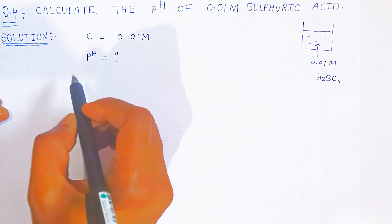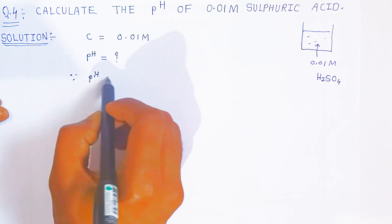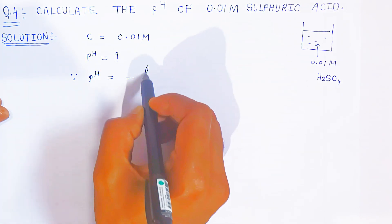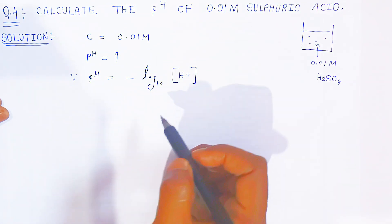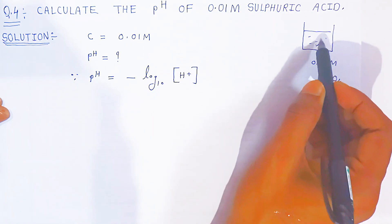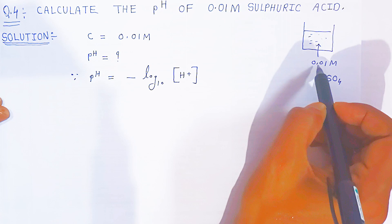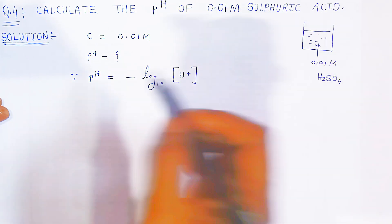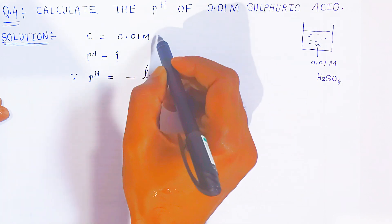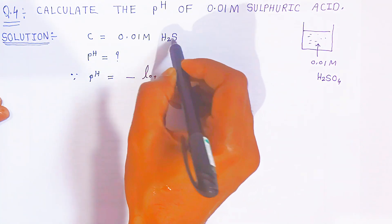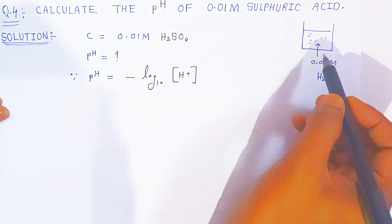pH is nothing but the negative log base 10 of the hydrogen ion concentration. So if we know the hydrogen ion concentration in this solution — and the concentration of sulfuric acid is given as 0.01 molar — then we can calculate pH. However, the concentration of hydrogen ions is not directly given, so we will calculate it first.